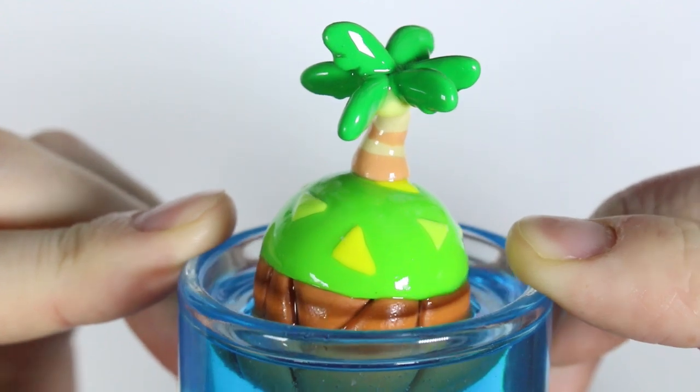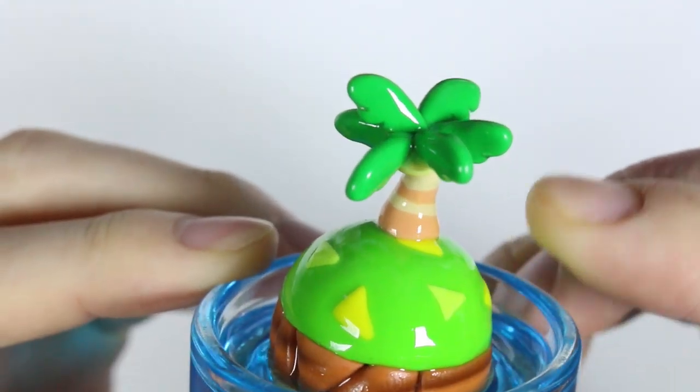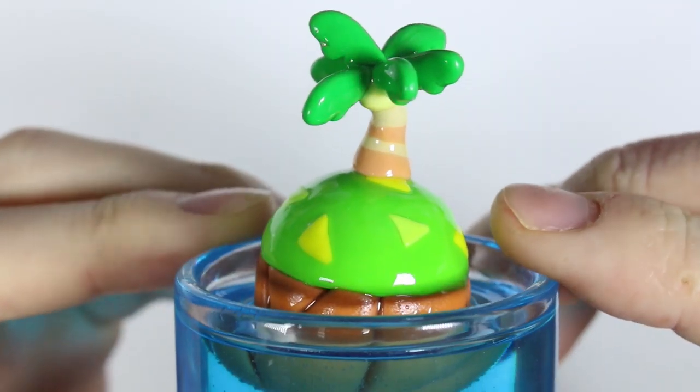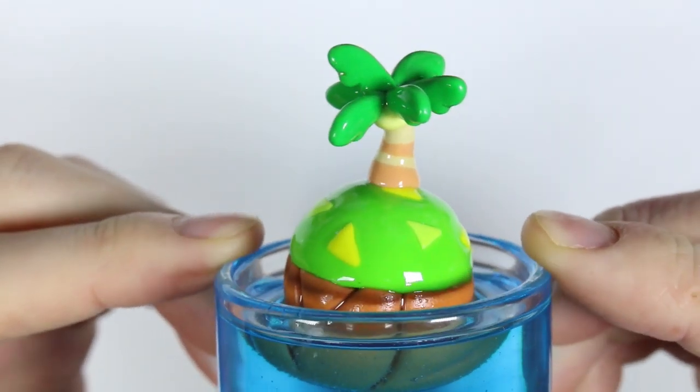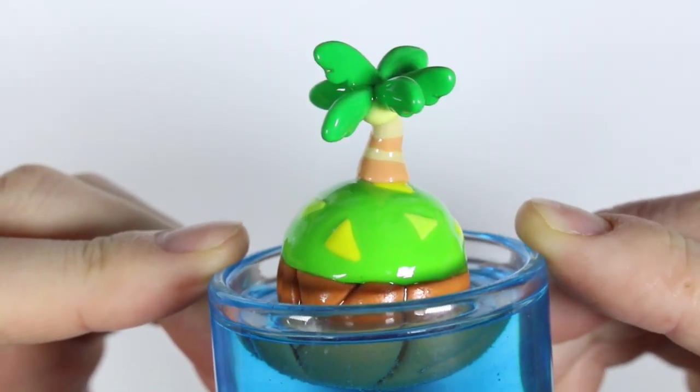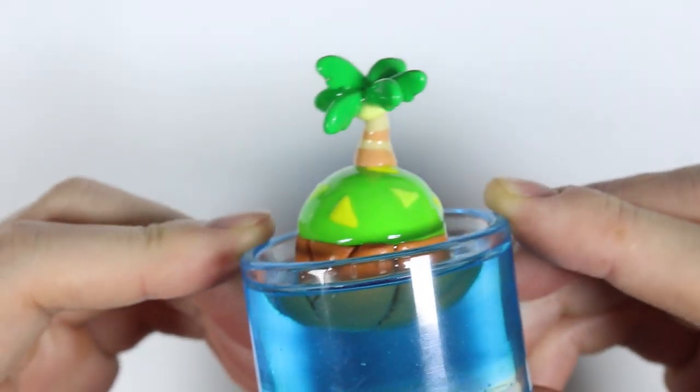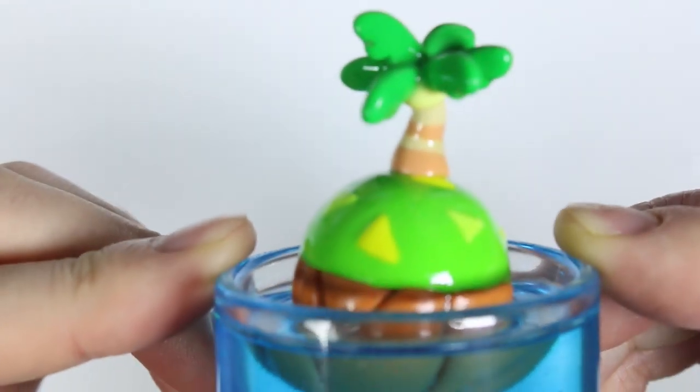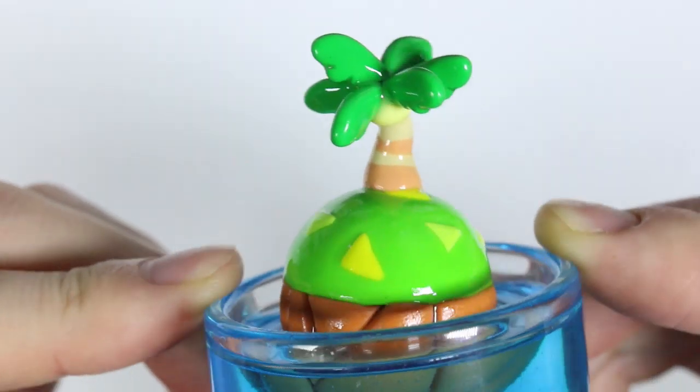And once it's fully cured, we have our floating Animal Crossing miniature island on top of some resin water figure complete. And this tutorial was inspired by the Animal Crossing loading symbol after you save. It's usually on the bottom right side of the game.